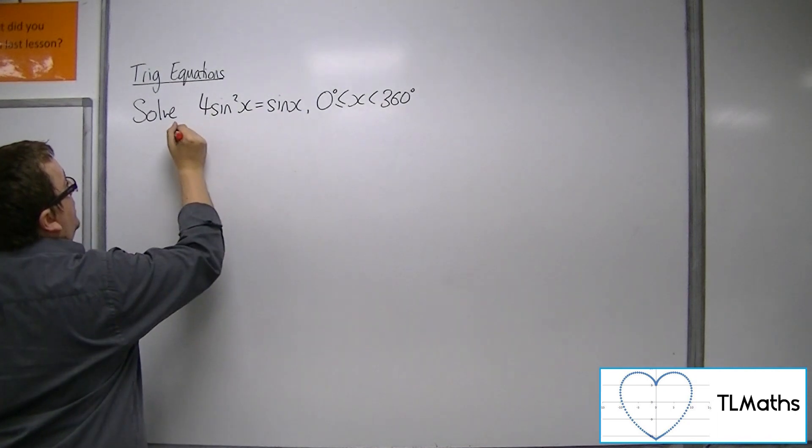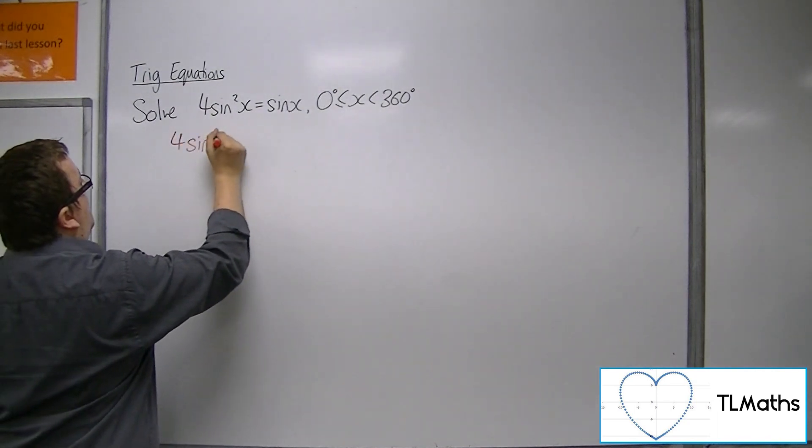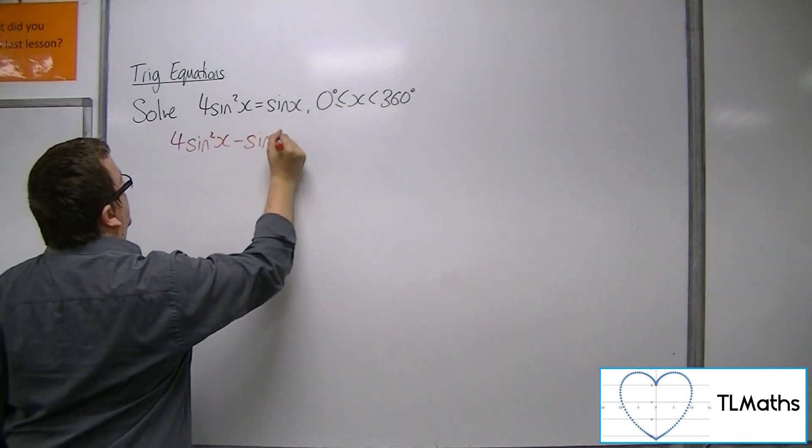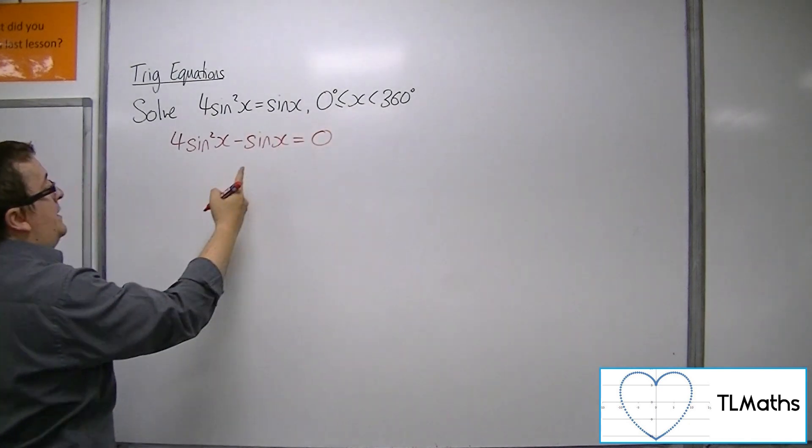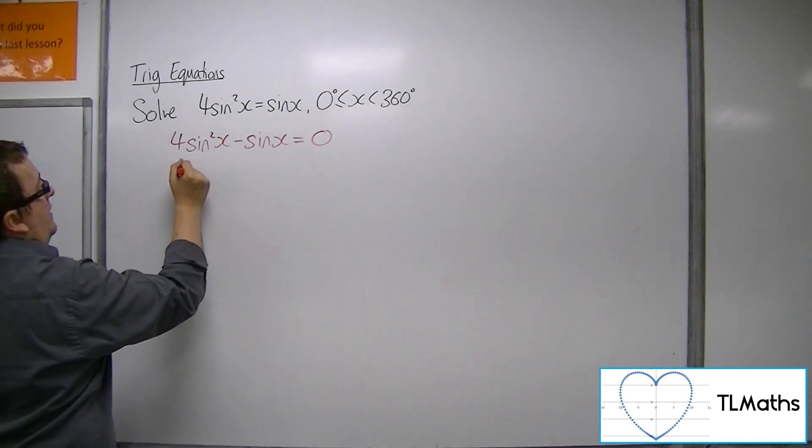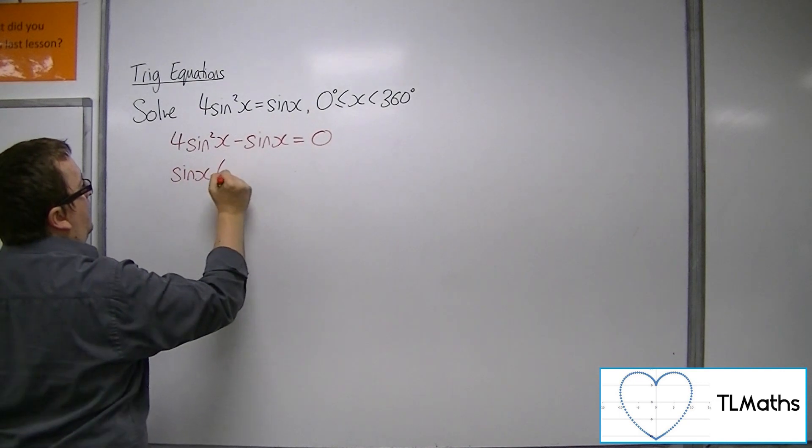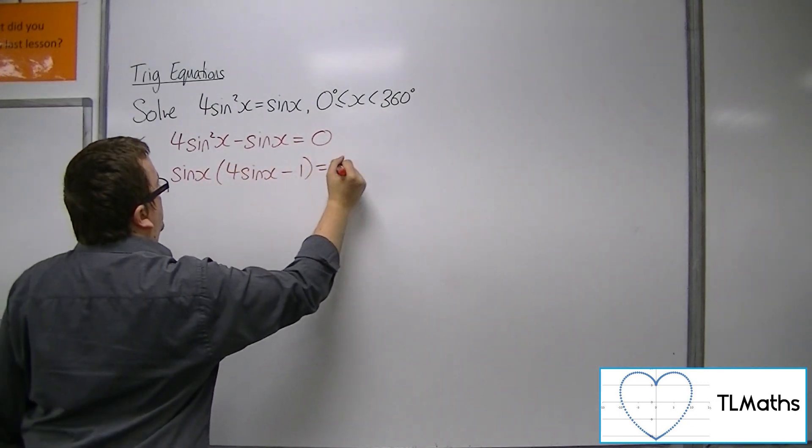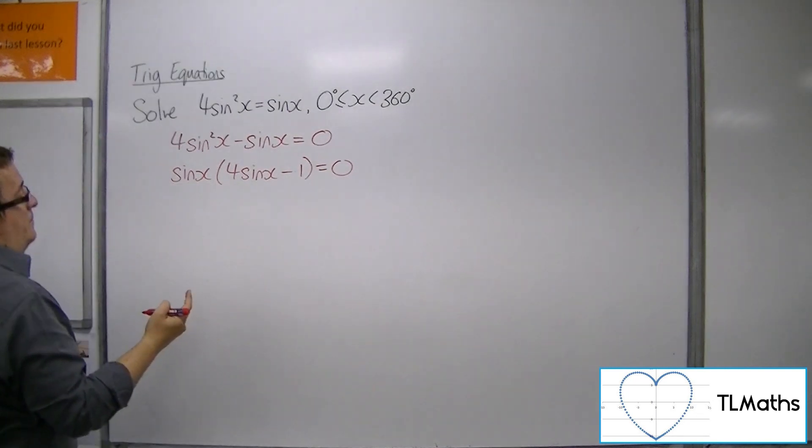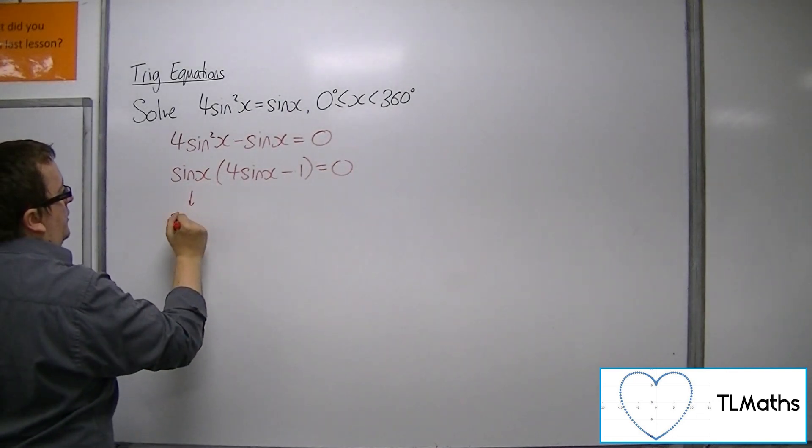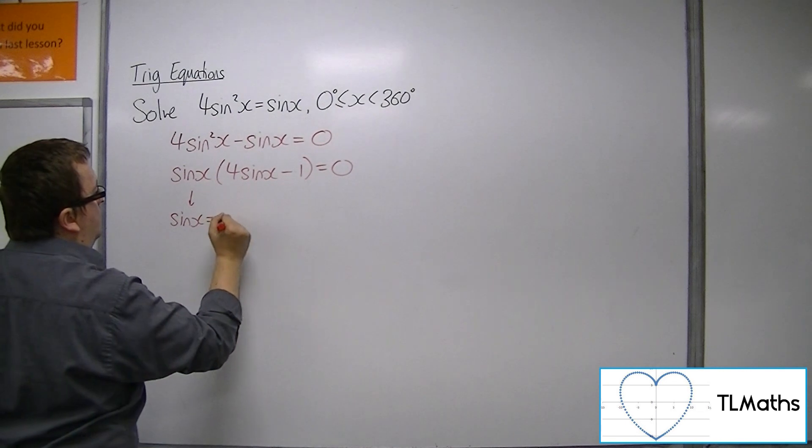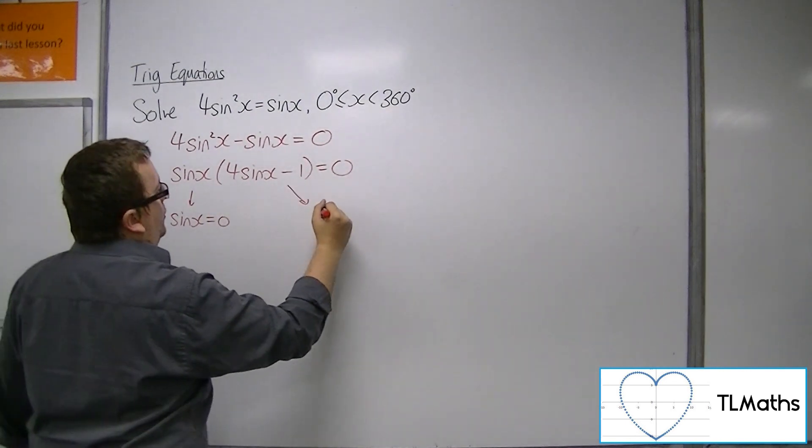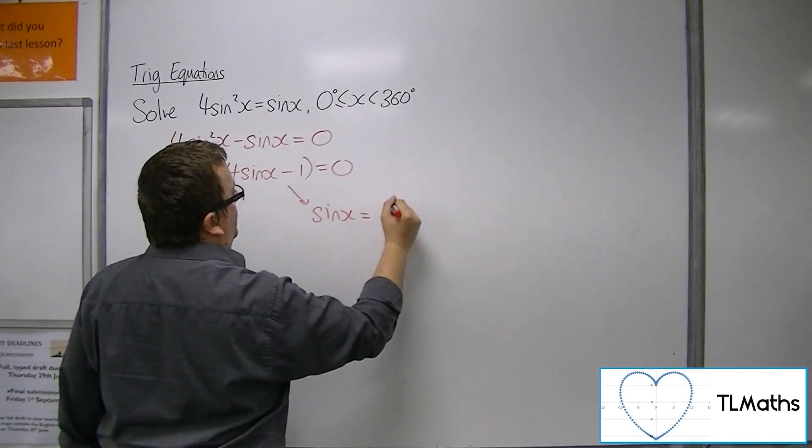So we need to subtract the sinx from both sides and then factorize the quadratic that we have left. So factoring out the sinx leaves us this equation here. So either sinx equals 0 or sinx is equal to 1 quarter.